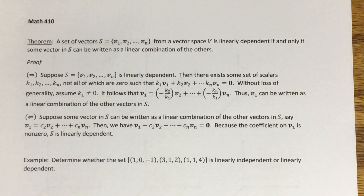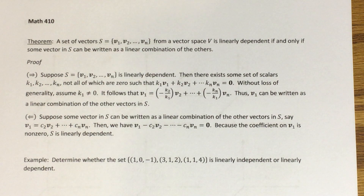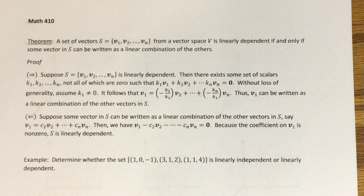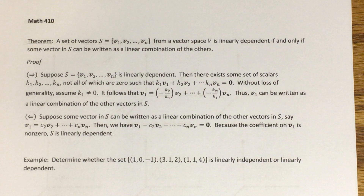At the end of the last video, we talked about a theorem with two basic properties of linearly independent and linearly dependent sets. We said that if a set contains the zero vector, then it's automatically going to be linearly dependent. And we also said, for part B of that theorem, if a set contains exactly two vectors and one vector is a scalar multiple of the other, then it's also going to be linearly dependent.